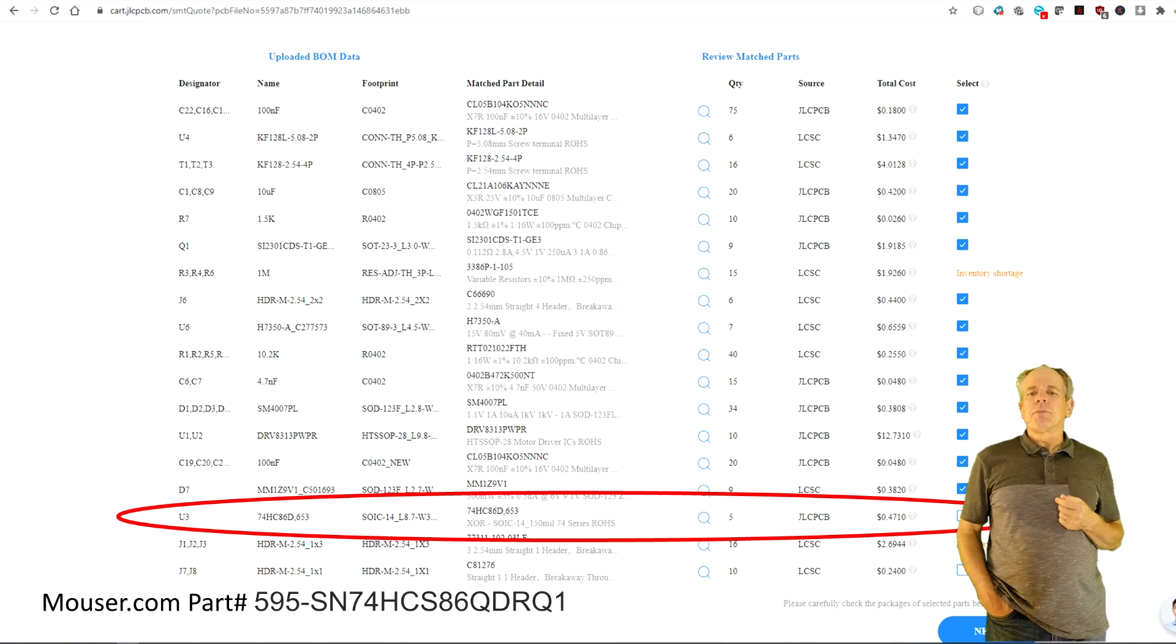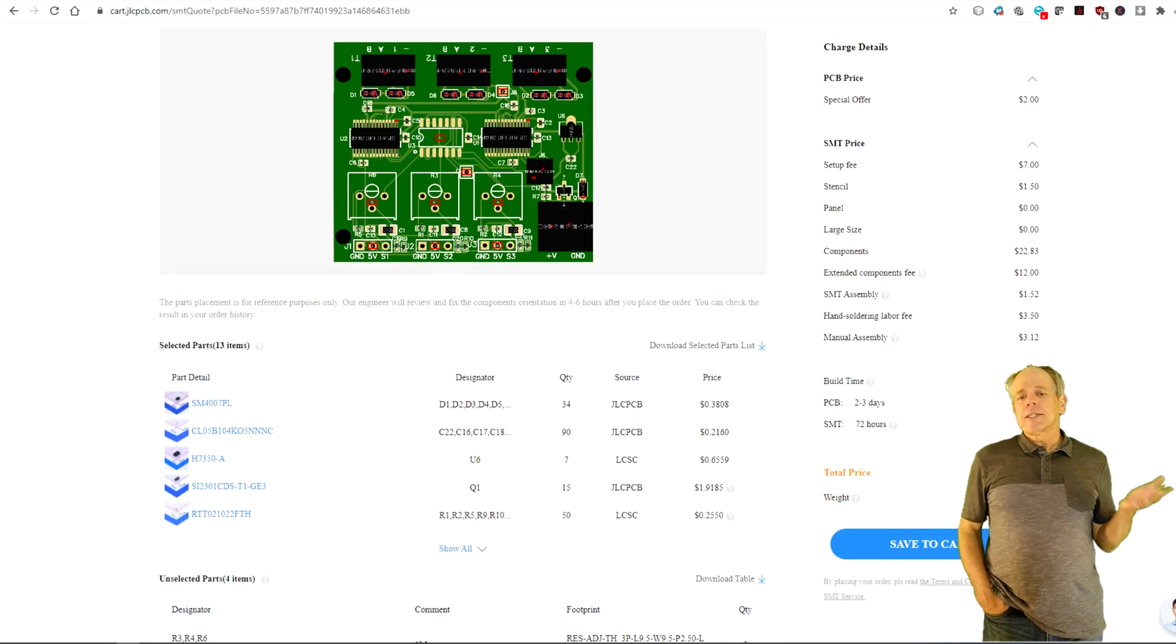In any case, you need to deactivate the selection of the XOR chip as the chip in the bill of material is the standard input chip, not the one with Schmidt trigger input. Unfortunately, the chip supplier of JLCPCB does not carry the Schmidt trigger version. But you can order it from Mauser and install it yourself, which is not complicated to do. The Mauser part number for the chip is in the description below. That's it. So, you upload the order and about 10 days later, the boards will show up in your mailbox. Quite convenient.